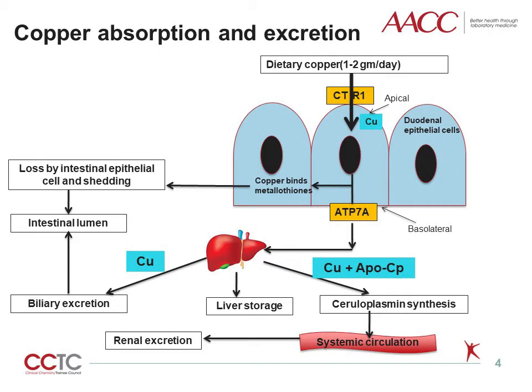Absorption of copper takes place primarily in the duodenum, the absorption not being influenced by the amount of copper stored in the body. The copper transporter receptor 1, that is CTR1, is responsible for uptake of copper by intestinal epithelial cells. A major portion, 25 to 60 percent, is transported out by ATP7A, which is a transmembrane copper transporting P-type ATPase mutated in Menkes disease, to the basolateral surface, into the portal circulation, and to liver. This protein is expressed in the intestine and other tissues, but not in the liver.